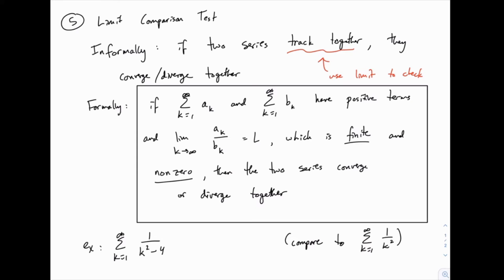Formally, what we do is take our two series, divide one by the other, and see if that fraction trends toward zero or infinity as k increases. In either of those cases, the series don't track together, so this test doesn't tell us anything — the two series break apart from each other. But if that fraction has a finite non-zero limit, then the two series converge or diverge together. If we divide those two series and take a limit and get something that's neither zero nor infinity, then the convergence and divergence of the two series will be identical.